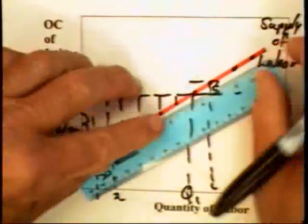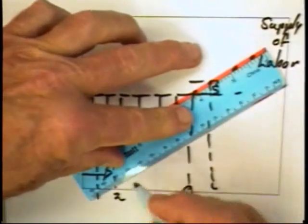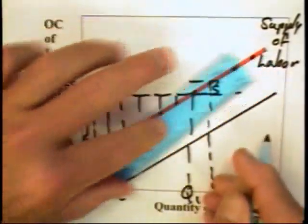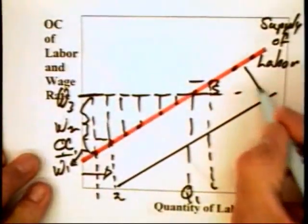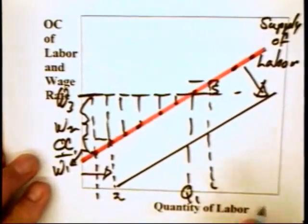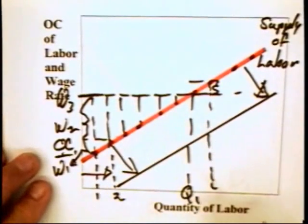Well, the supply curve of labor can, in fact, increase. And it can do so on the grounds that the opportunity cost of workers goes up.